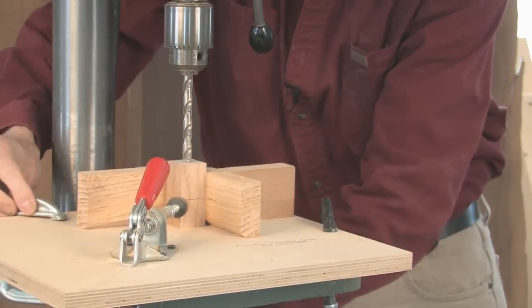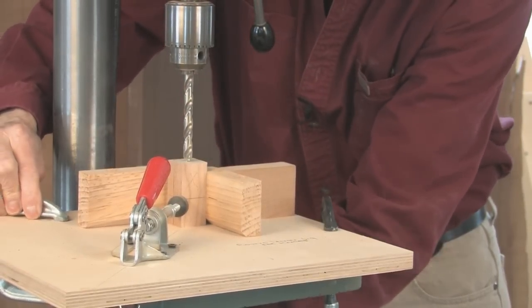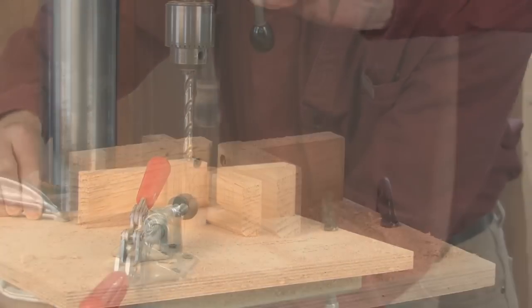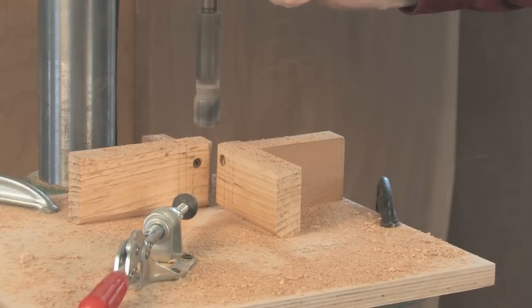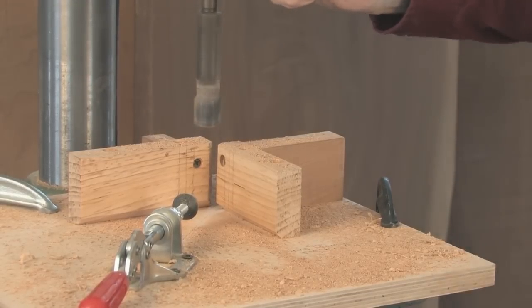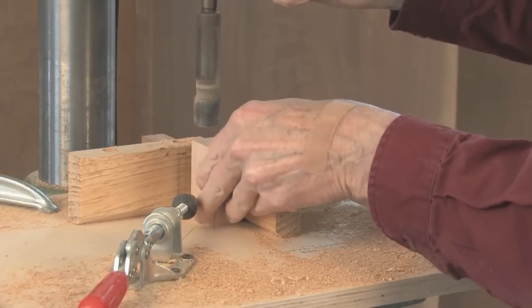And then I would clamp the jig to the table and start drilling with a half-inch tenon cutter. Now you'll want to go with a tenon cutter roughly between 1,000 and 2,000 RPM.